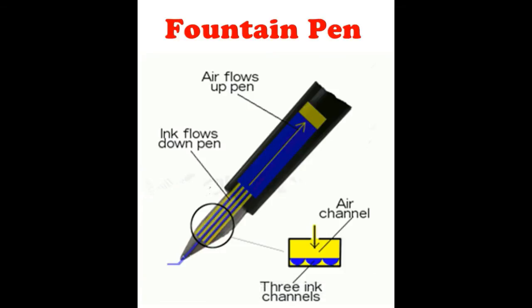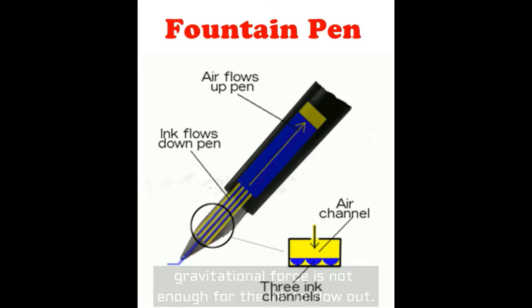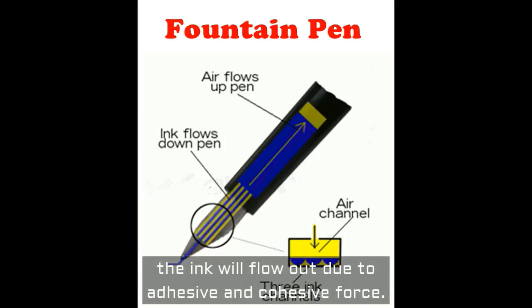Next is the fountain pen. When you hold the pen straight, gravitational force is not enough for the ink to flow up. However, when the tip of the pen touches and drags along the paper, the ink will flow out due to adhesive and cohesive force.